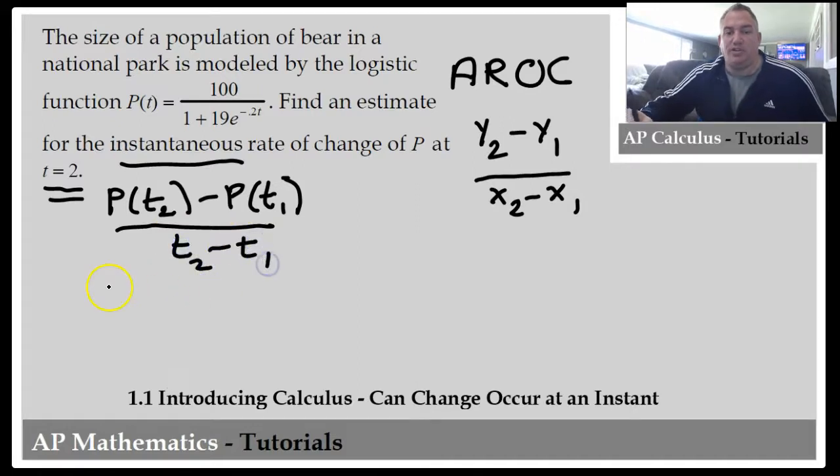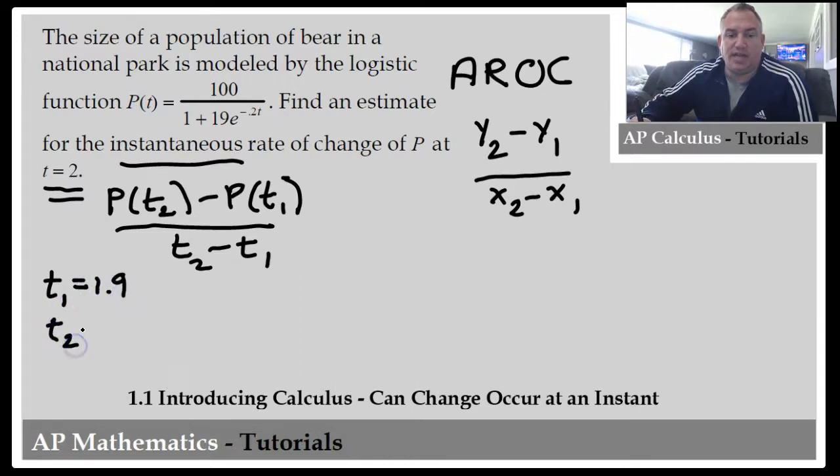We just have to figure out what values we're going to use for t sub 1 and t sub 2. Since we're trying to find the instantaneous rate of change at 2, we're going to pick values of t that are very close to 2. We're going to go on either side of 2, and let's choose our first one, t sub 1, to be 1.9. And we'll stay symmetrically on the other side. We'll let t sub 2 be 2.1.